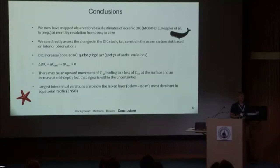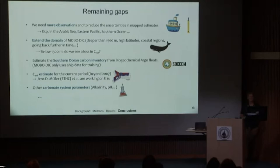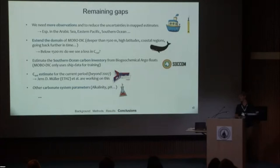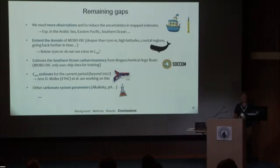There may be an upward movement of natural carbon leading to a loss at the surface, but the signal is within uncertainties. For interannual variability, it's most pronounced below the mixed layer — below about 150 m — and most dominant in the equatorial Pacific. There are still remaining gaps: we need more observations to reduce uncertainties, especially in the Arabian Sea, Eastern Pacific, and Southern Ocean. It would be great to extend MOBA-DIC deeper than 1,500 m, to include high latitudes and coastal regions, and to go further back in time for decadal variations. Estimating the Southern Ocean carbon inventory from biogeochemical Argo floats would also be a great project.